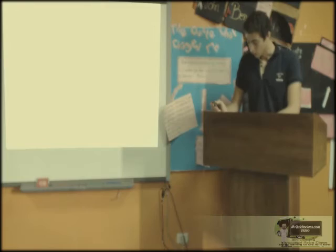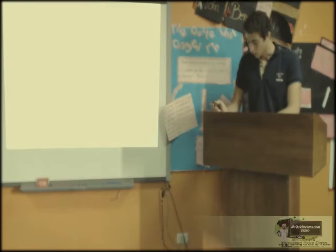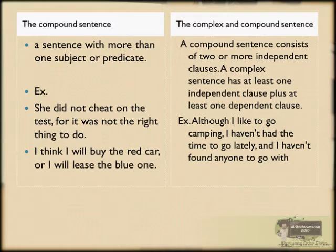The compound-complex sentence: a compound sentence consists of two or more independent clauses. A complex sentence has at least one independent clause plus at least one dependent clause. Example: 'Although I like to go camping, I haven't had the time to go lately and I haven't found anyone to go with.'